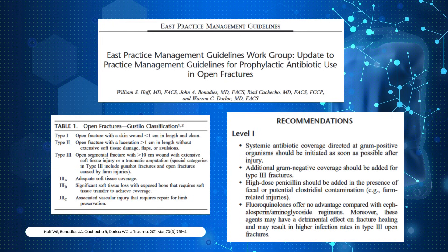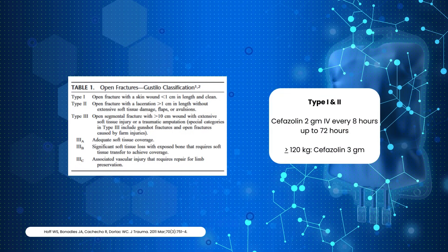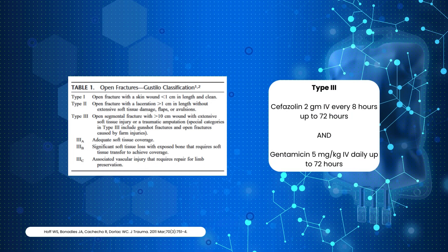For Type 1 and 2 open fractures, we treat with cefazolin 2g IV every 8 hours and continue prophylactic antibiotics for up to 72 hours. Those weighing greater than or equal to 120 kg receive an increased dose of cefazolin 3g. Patients with Type 3 open fractures receive cefazolin 2g IV every 8 hours in addition to gentamicin 5mg per kg of adjusted body weight daily intravenously for up to 72 hours. Type 3 injuries require expanded gram-negative coverage.